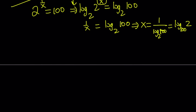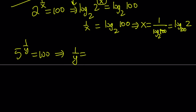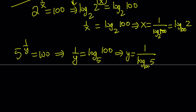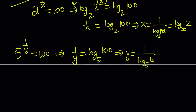Let's find the y value the same way. We have 5 to the power 1 over y equals 100. Then 1 over y, by logging both sides with base 5, equals log base 5 of 100. And then y is just the reciprocal, which can be written as log base 100 of 5.